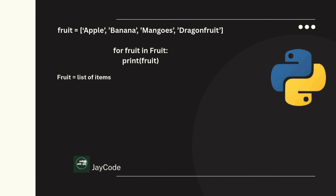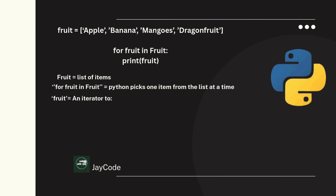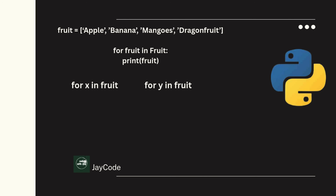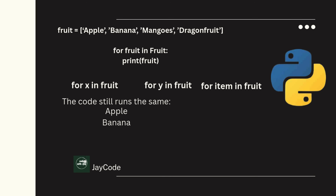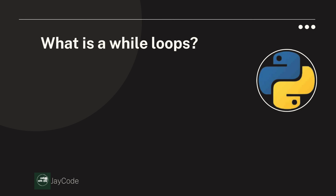Let's break this down. 'fruits' is the list that houses apple, banana, mango, and dragon fruit. 'for fruit in fruits' means Python picks one item from the list at a time. The variable 'fruit' is an iterator — it's assigned to apple, then banana, then mango, then dragon fruit. You can name this variable whatever you want: x, y, or items — the code still works the same.